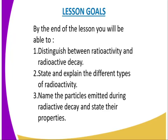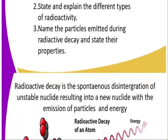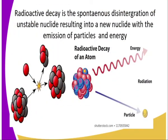By the end of this lesson we will be able to do the following: distinguish between radioactivity and radioactive decay; state and explain the different types of radioactivity; and name the particles emitted during radioactive decay and state their properties.